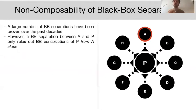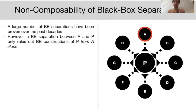However, there is a strong caveat to all these black box separations. Suppose primitive P has been black box separated from many other primitives A, B, C, and so on. For each of these, I know there is no black box construction of P from that primitive. But any such impossibility result only rules out constructing P in a black box way from a single primitive taken in isolation.